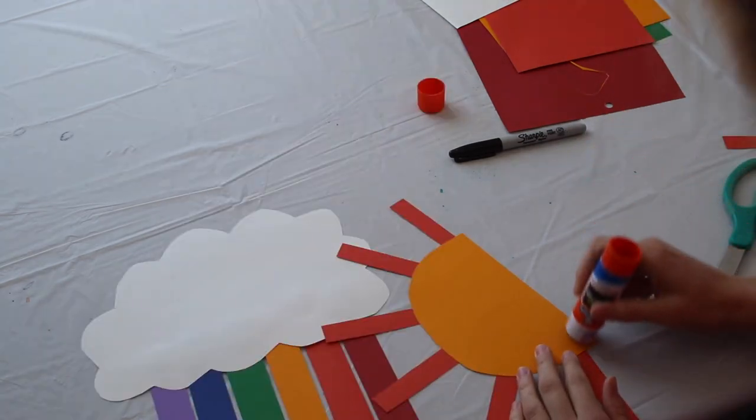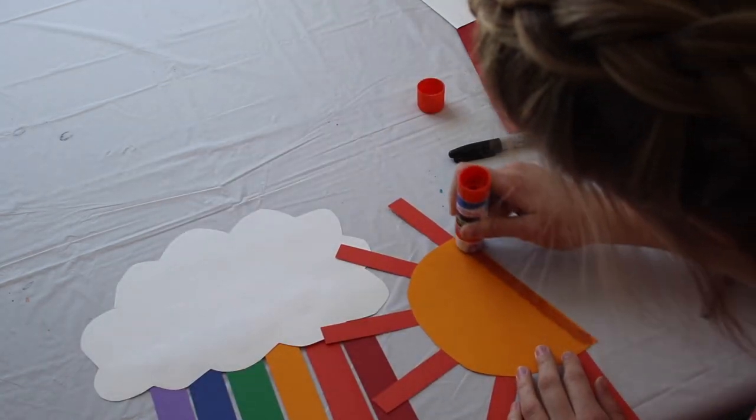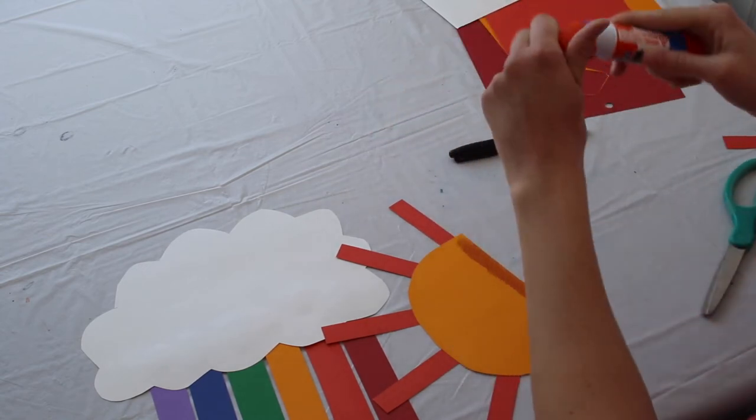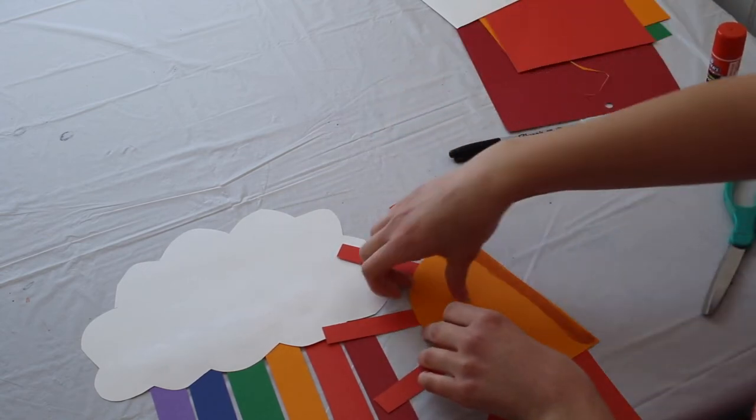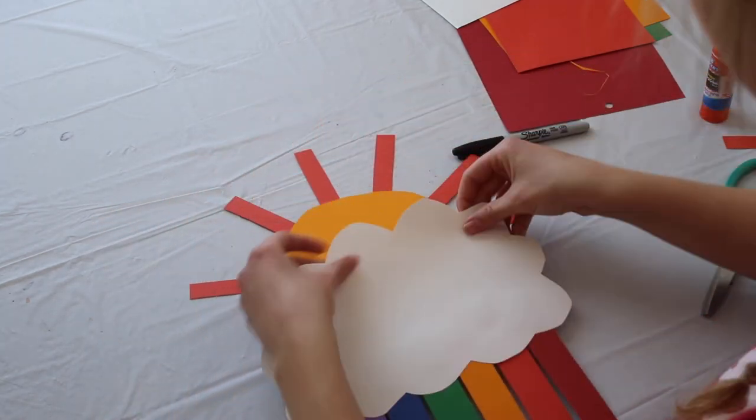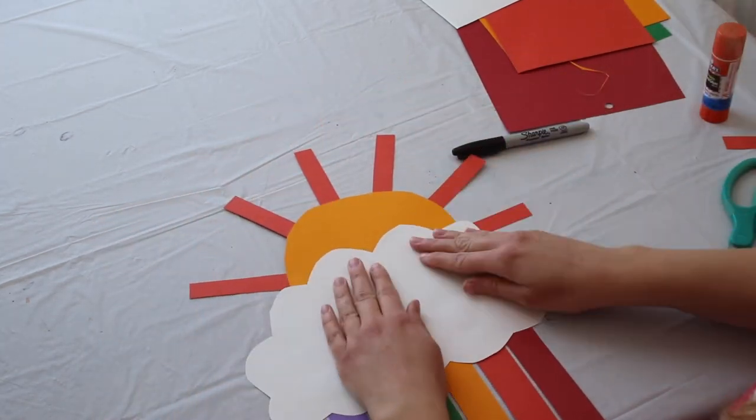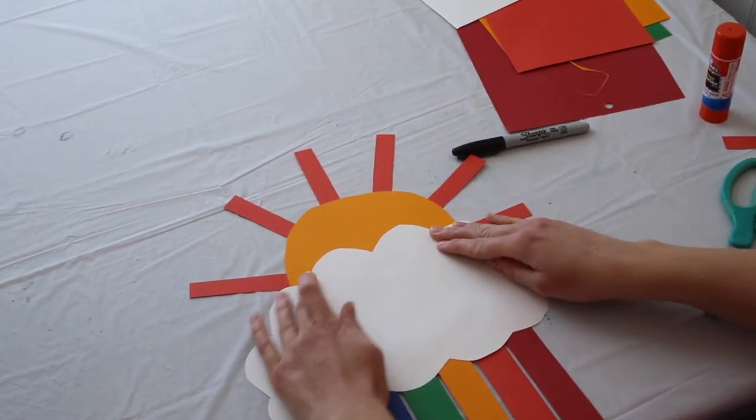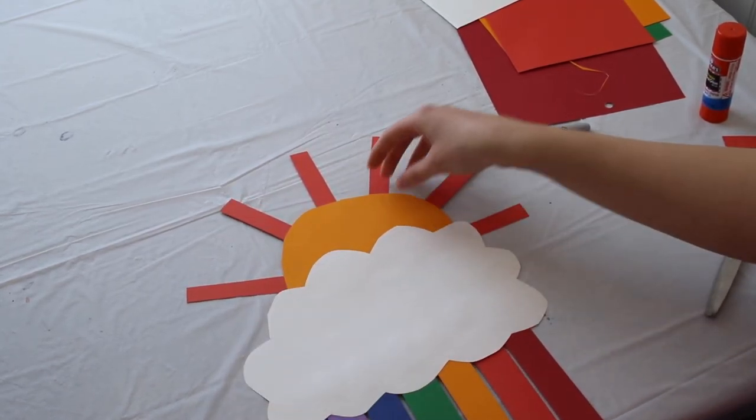So you're going to take your glue stick and put a stripe of glue on the bottom of your sun, and then you'll take your cloud and put it right on top of your sun. There.